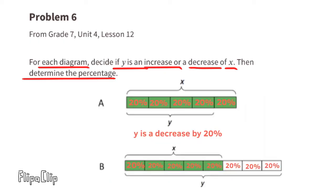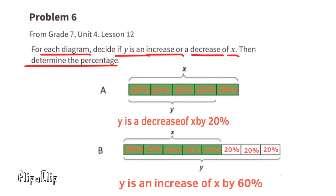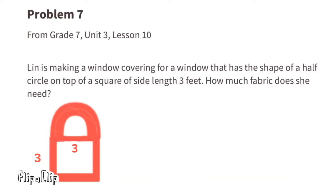Part B: x is still divided into five equal pieces of 20 percent each, totaling 100 percent of x. But this time y has increased beyond that with three additional boxes, each worth 20 percent. y is an increase of x by 60 percent, because 20 plus 20 plus 20 equals 60 percent.